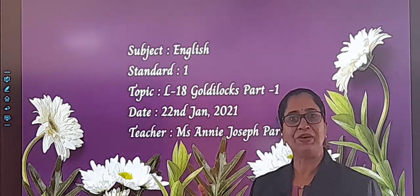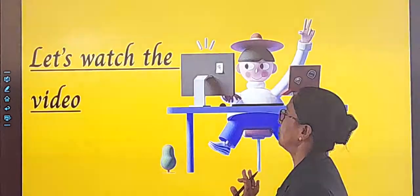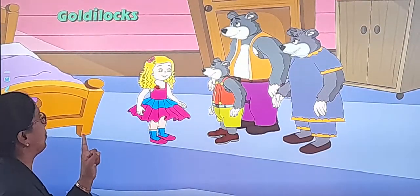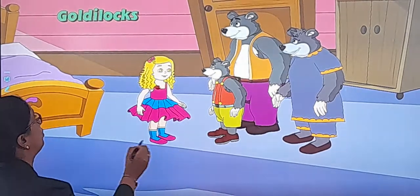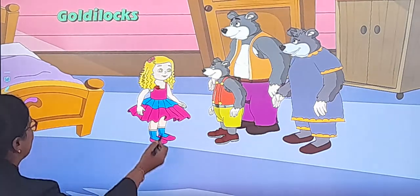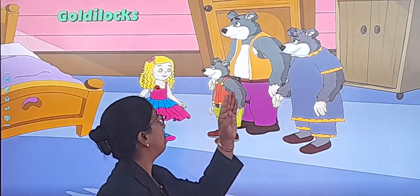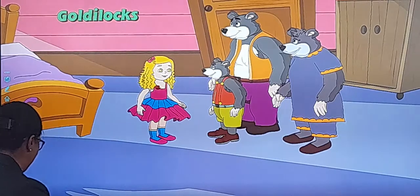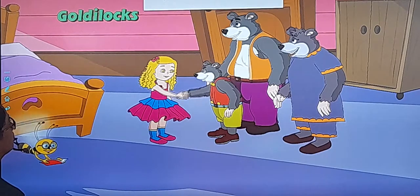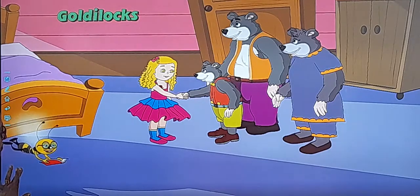Today we are going to watch the video of the story, and in Part 1 we will be discussing the question and answer. So let's watch the video — do watch the story carefully. You have done the reading; now today you are going to see the story actually happening. This is Goldilocks, and these are the three bears: the mama bear, the papa bear, and the baby bear.